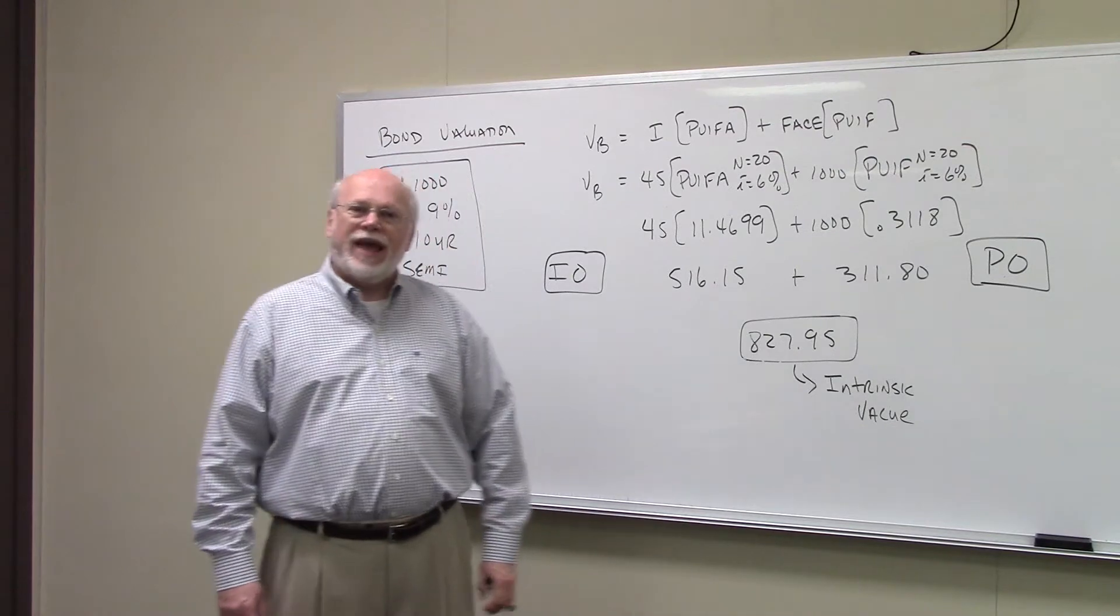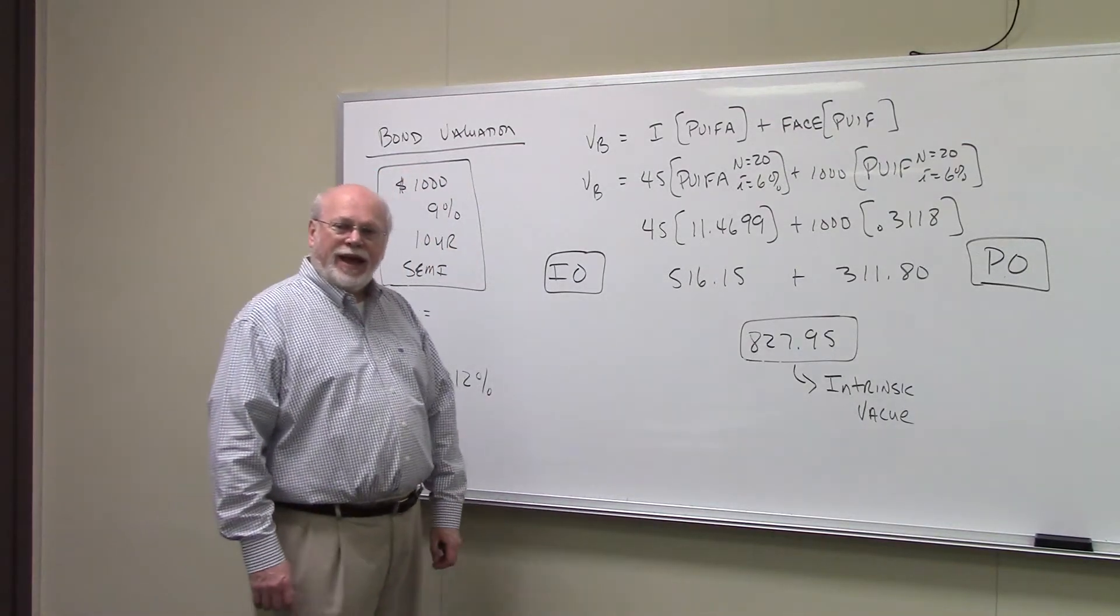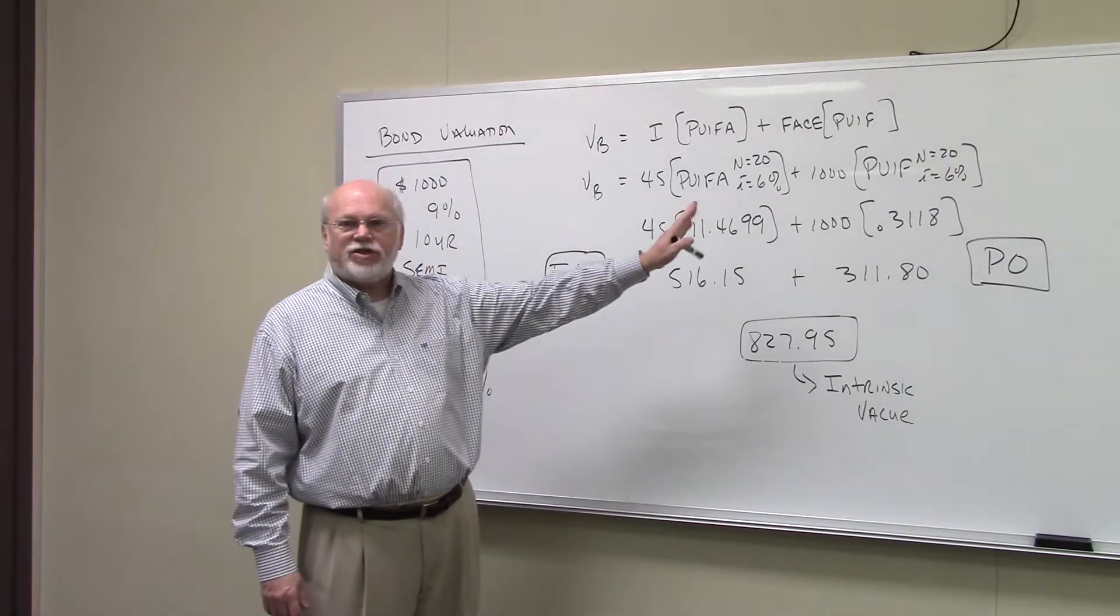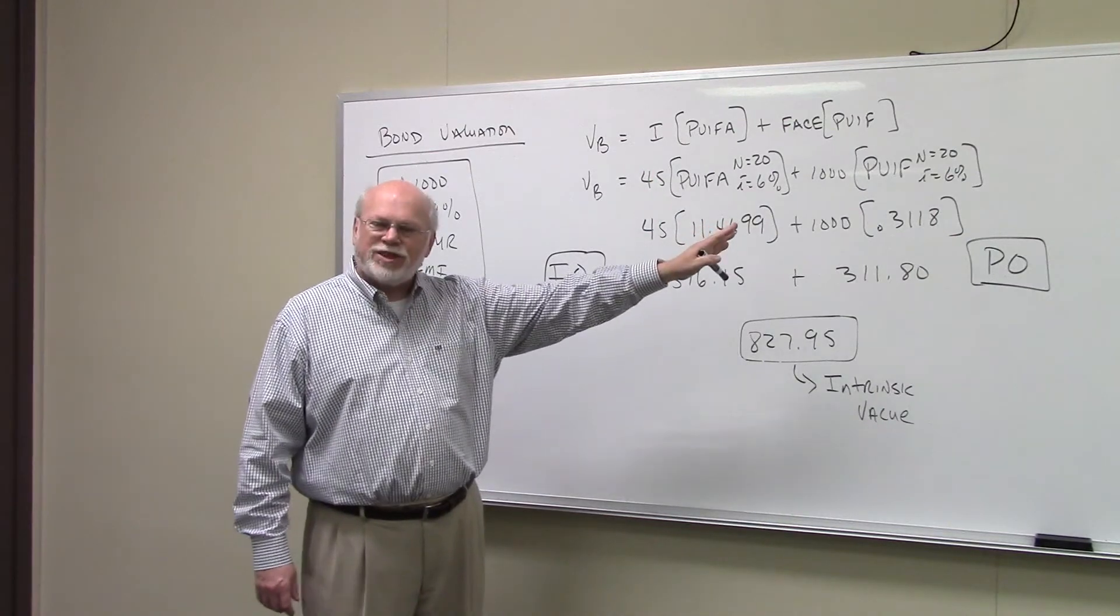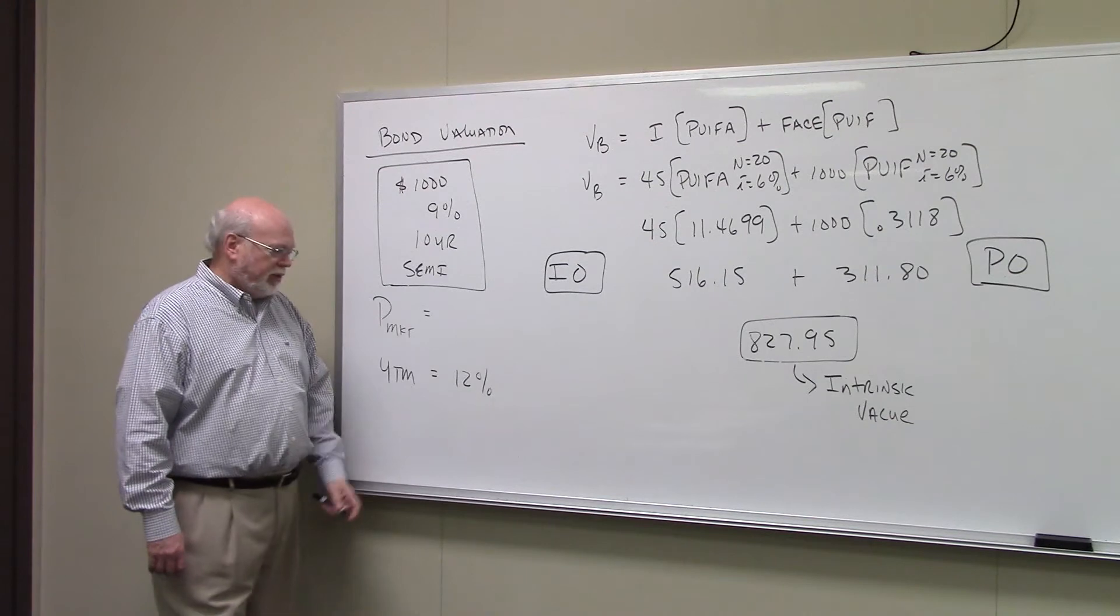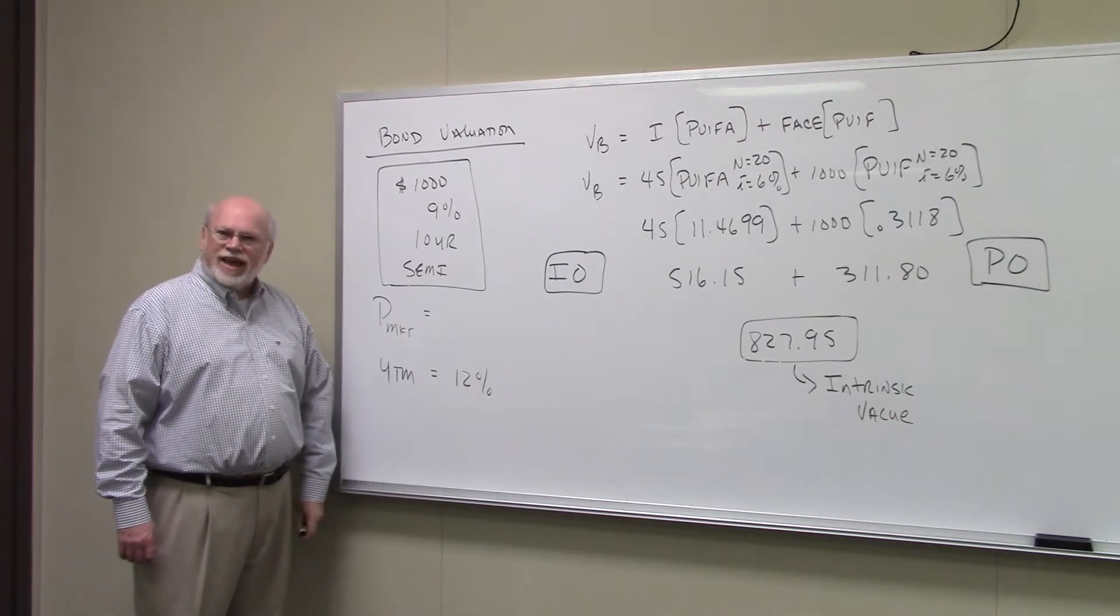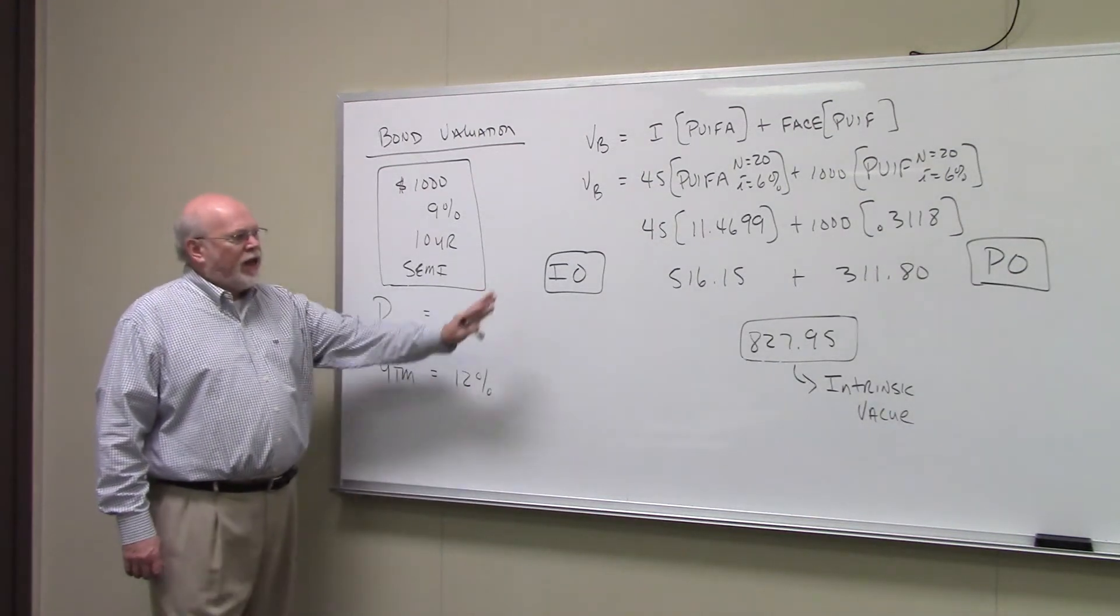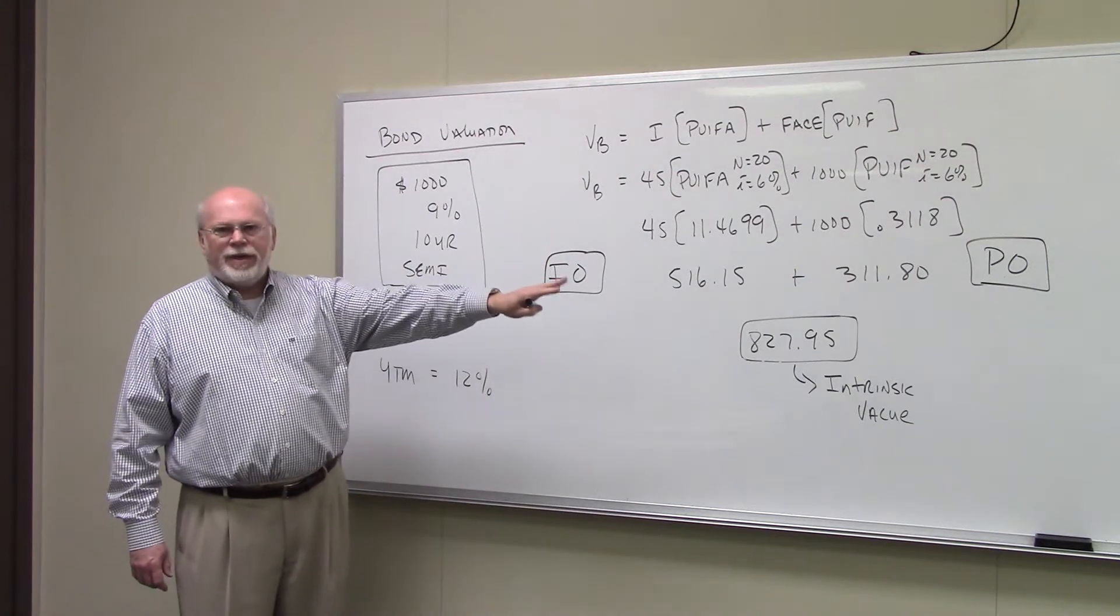So if you pay $311.80 for an investment today, and from that investment you get $1,000 in 20 six-month time periods from now, what's going to be your annualized rate of return on that investment? Exactly 12%. An I-O portion and a P-O portion.